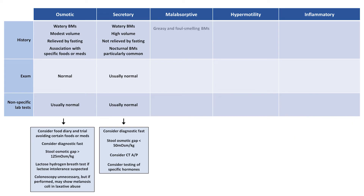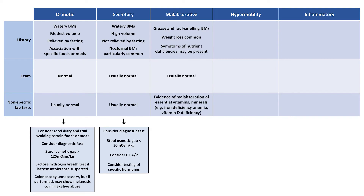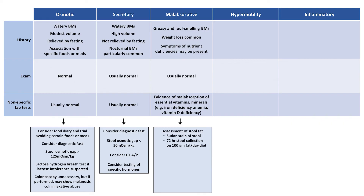In malabsorptive diarrhea, characterized by greasy and foul-smelling stool, weight loss is common and patients may have symptoms of nutrient deficiencies. Routine tests may show anemia related to iron, B12, or folate deficiency, or calcium and phosphate abnormalities related to vitamin D deficiency. Further assessment includes stool fat evaluation — either a qualitative Sudan stain or a quantitative 72-hour stool fat collection on a 100-gram fat per day diet. Upper endoscopy is often performed, plus or minus ERCP if a pancreatic etiology is suspected. Blood tests include serologic testing for celiac disease and fecal elastase 1, a deficiency of which indicates pancreatic insufficiency.